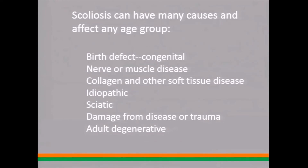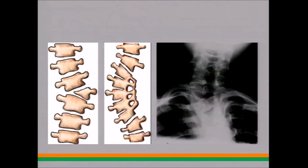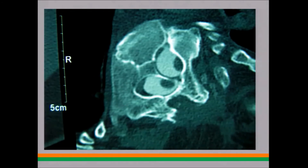There are many causes of scoliosis that affect the spine itself. Scoliosis can result from a birth defect. In a four-week-old embryo, the precursors of the vertebra — called somites — come together. If they don't form correctly, you might have half a vertebra form on one side, or they may not separate and form a bar instead. They may also not fully come together — here's a CT scan showing two spinal cords instead of one, with a bony split down the middle.